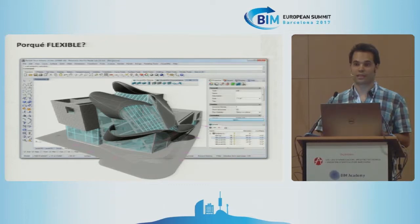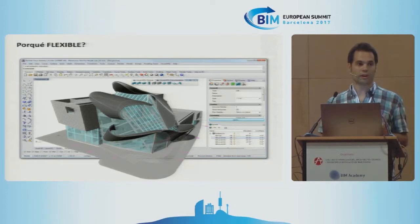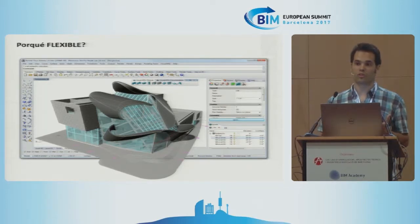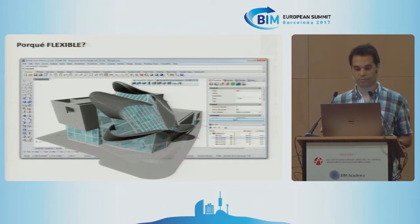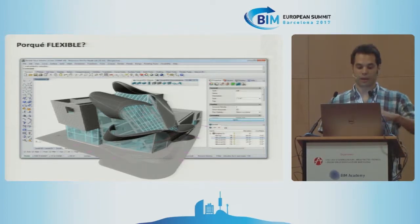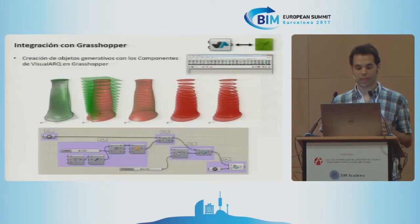Why do we talk about flexible BIM? Because we work with flexible and complex shapes. With very few control points, we get full precision. This is used in construction for modeling shapes that are later 3D printed, and it is also very useful for complex and flexible geometries.